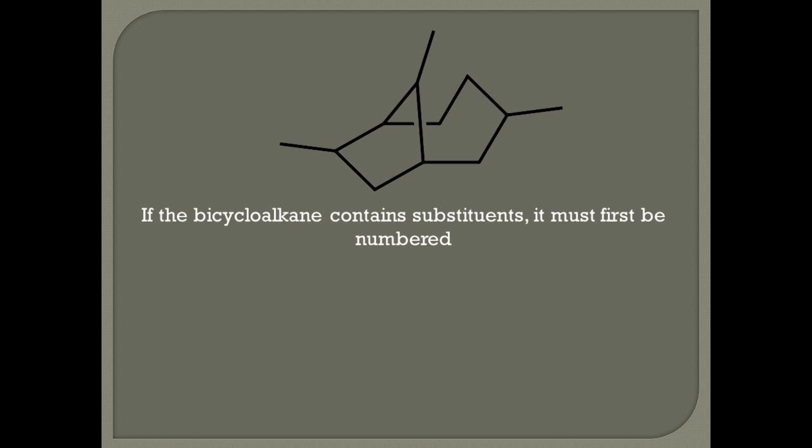Rule 2. If the bicyclo alkane contains substituents, it must first be numbered. To number a bicyclic compound, we always start at one of the two connecting points.